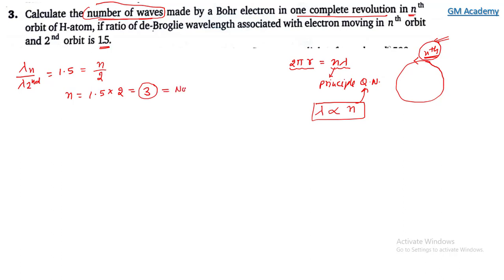The number of waves in the nth orbit for one complete revolution equals the principal quantum number, which is 3. So the third answer is 3.